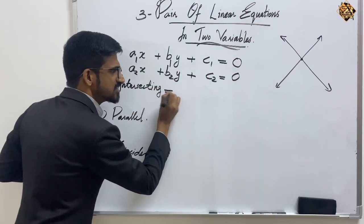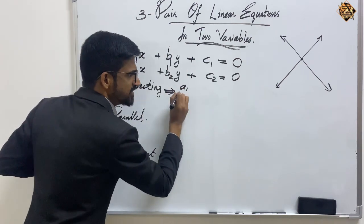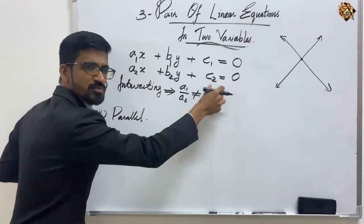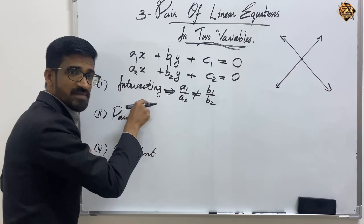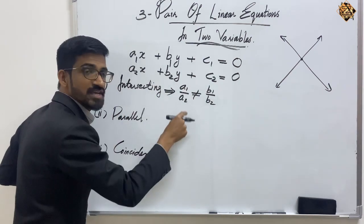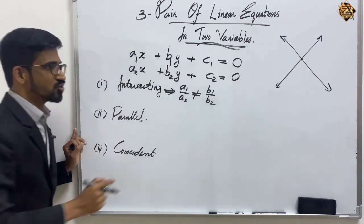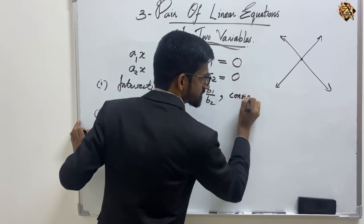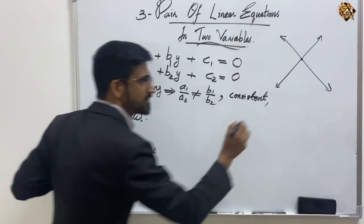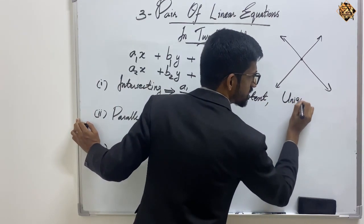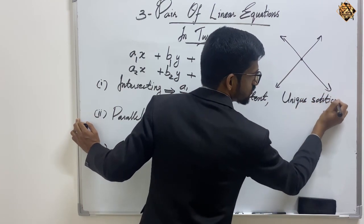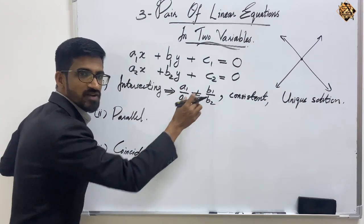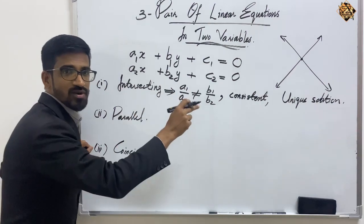If the lines are intersecting, then from the equations we can say that a₁/a₂ ≠ b₁/b₂. If a₁/a₂ is not equal to b₁/b₂, then the lines are intersecting. You must also note that if the lines are intersecting, the pair of linear equations will be consistent and there will be only one solution — a unique solution.